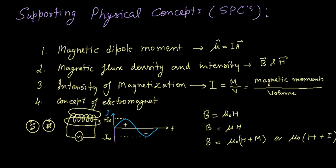The second supporting physical concept is magnetic flux density and intensity, denoted by B and H, and the difference between them. The intensity of magnetization is denoted by I, where I = M/V — M being the overall magnetic moment of the specimen and V the volume.